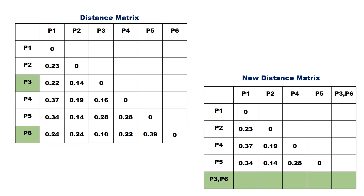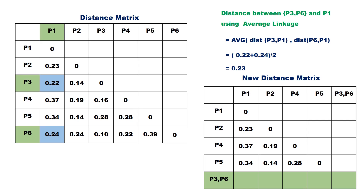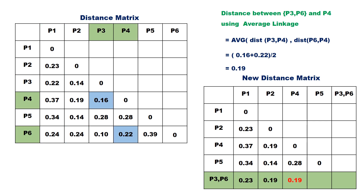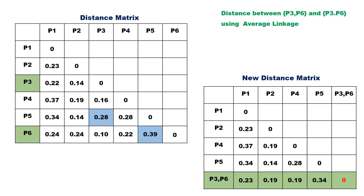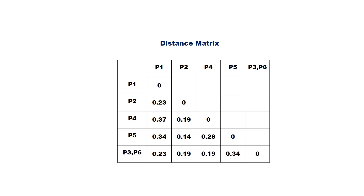Compute the distance between cluster P3,P6 and all other points. Since we are using average linkage clustering, we need to find the average of the distances. The distance between P3,P6 and P1 is the average of distance(P3,P1) = 0.22 and distance(P6,P1) = 0.24, giving 0.23. Similarly, the distance between P3,P6 and P2 is 0.19; between P3,P6 and P4 is 0.19; between P3,P6 and P5 is 0.34. This is the updated distance matrix after the first clustering.